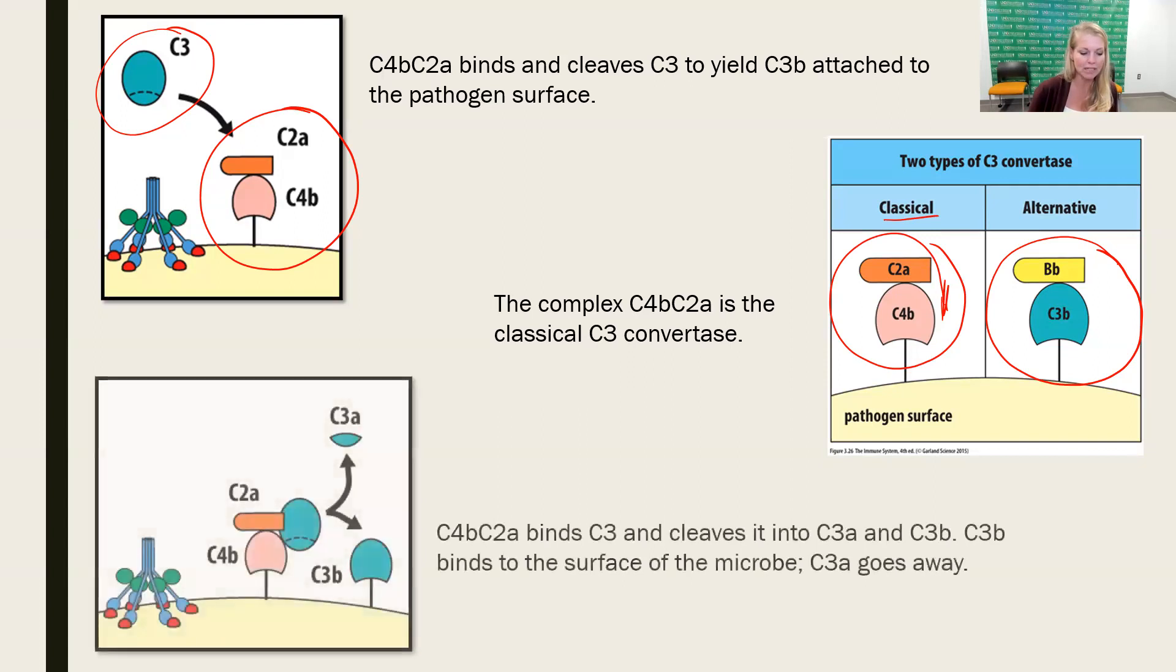The job of that protein combination is to cleave C3, and it's going to cleave C3 over and over and over again. C3As will go away. C3Bs will be deposited on the surface of the pathogen, just like what we saw in chapter two with the alternative pathway of complement activation.